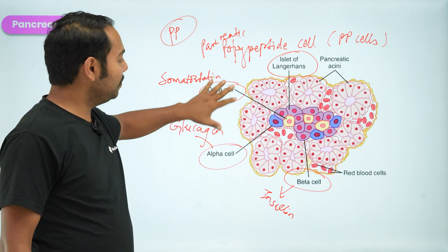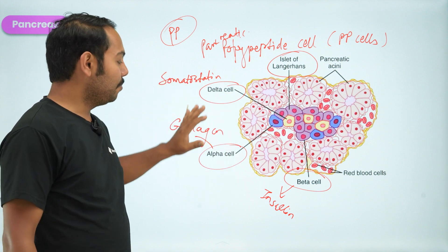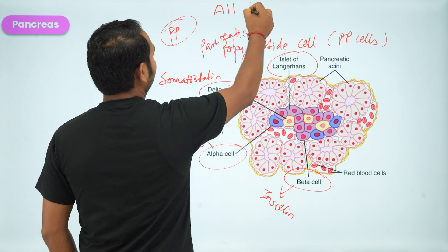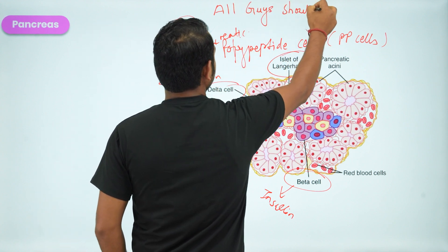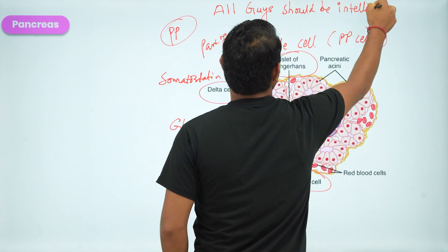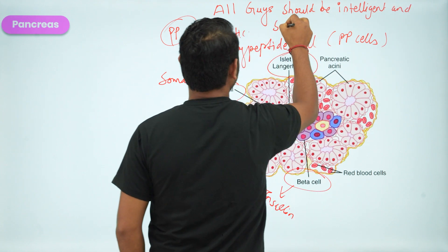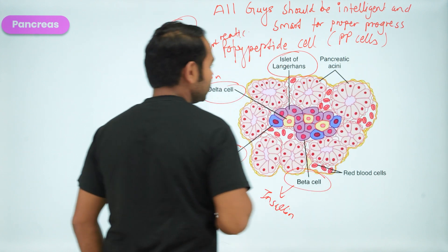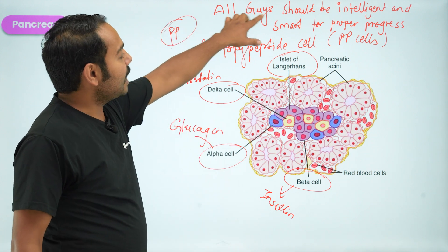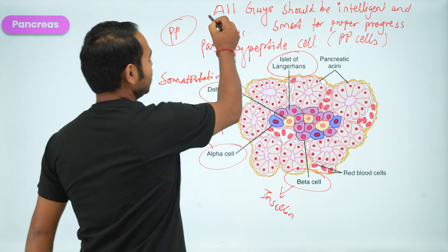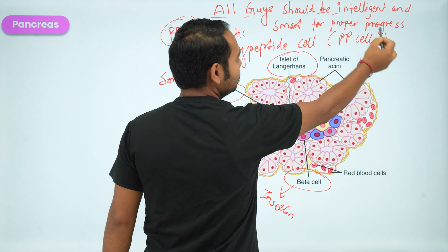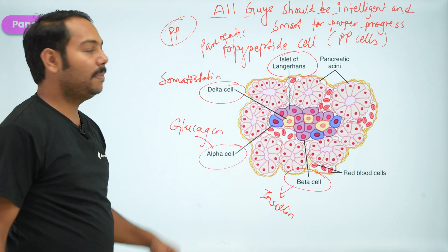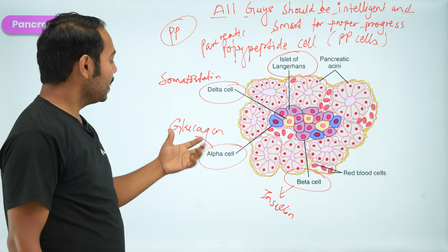The islets of Langerhans contain these hormone-secreting cells. To remember them: all guys should be intelligent and smart for proper progress — that means alpha cell secretes glucagon, beta cell secretes insulin, delta cell secretes somatostatin, and the PP cell secretes pancreatic polypeptide. In the next video, I am going to talk about the glucagon hormone.